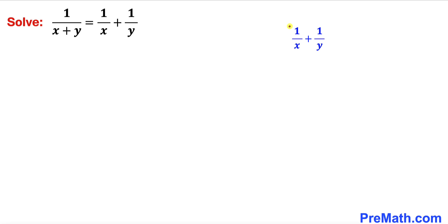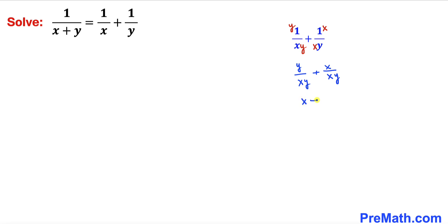I'm going to multiply the first term top and bottom by y, and the second term top and bottom by x. So therefore this can be written as y divided by (x times y) plus x divided by (x times y). Now we can see we have the same denominator.